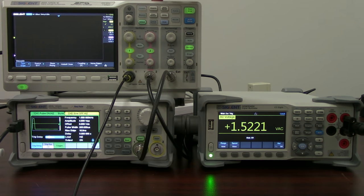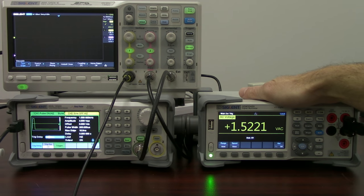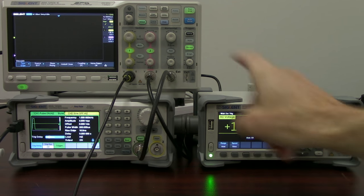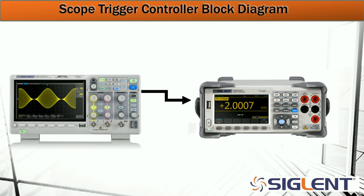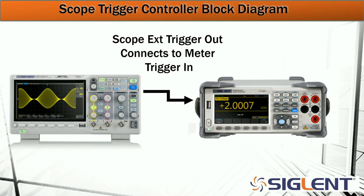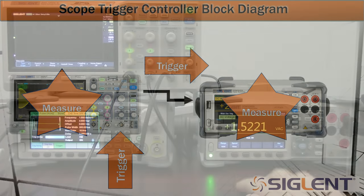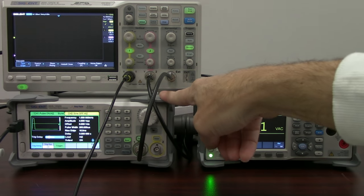The oscilloscope is then going to have its external trigger connected to this digital multimeter, the SDM3045X. So the oscilloscope is going to trigger, measure on channel 1 and channel 2, and simultaneously send a trigger output to the multimeter so that it can make an AC voltage measurement. And all of those are going to be synchronized.